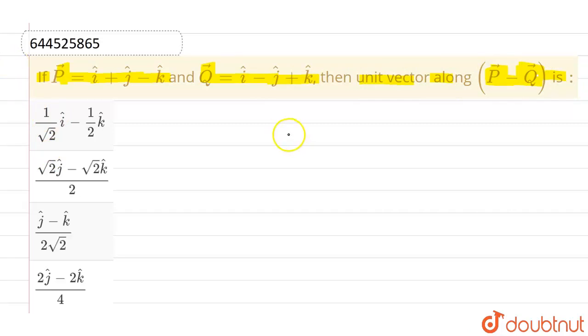So what we are given: P vector is i cap plus j cap minus k cap, and Q vector is i cap minus j cap plus k cap.